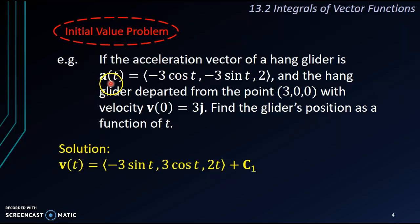So let's see, we integrate a, we integrate -3 cos t, we get -3 sin t, and then we integrate -3 sin t, we get 3 cos t. Lastly, 2, we integrate, we get 2t. So this is the anti-derivative, and don't forget to plus a constant.